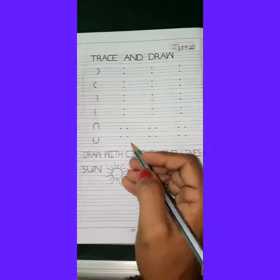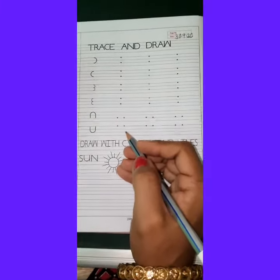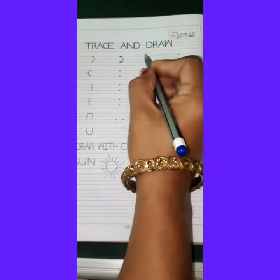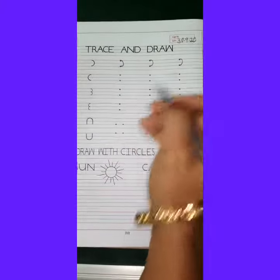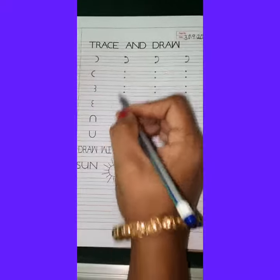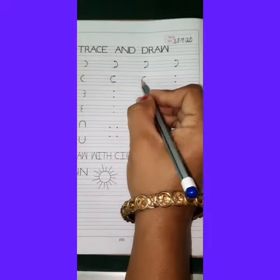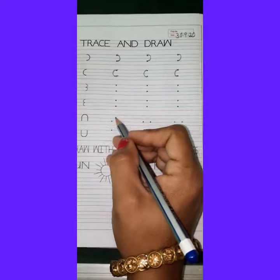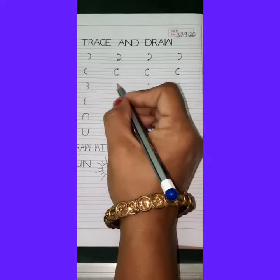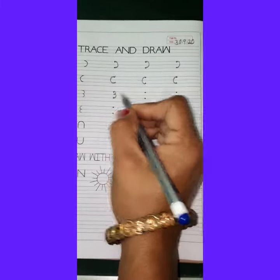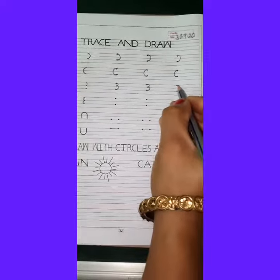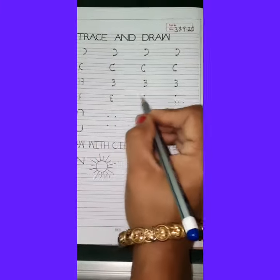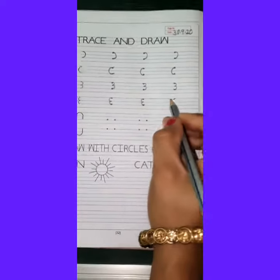Now children, we will write the curve line uppercase C like this. Now we will write curve line C again. Now we will write curve line again, small one like this. Again we will write curve line, uppercase C, chota wala aise.